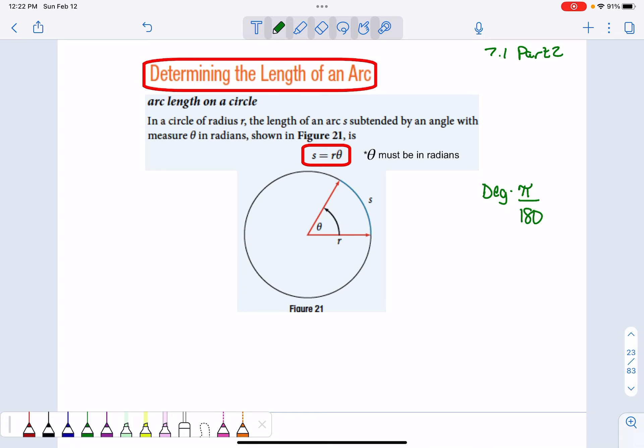S is our arc length. If R is our radius and theta is our radians, if it isn't in radians, use this conversion.